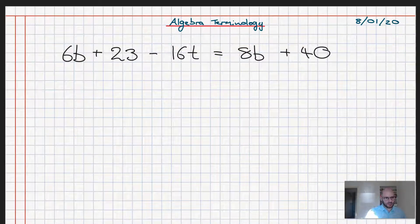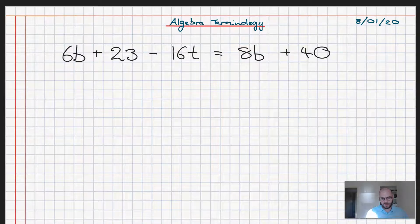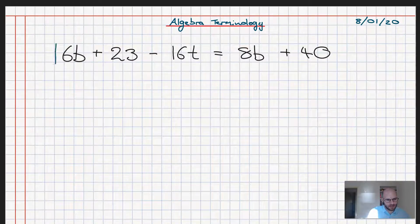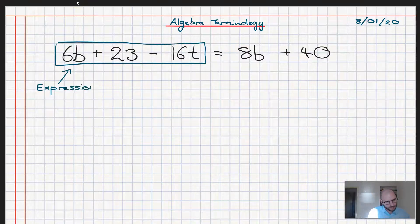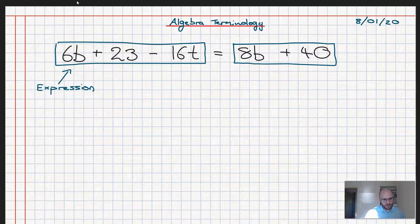Now the question we ask ourselves is, I can call this whole thing an equation, but what makes up an equation? And the answer to that is on either side of the equal sign, what we have are called expressions. So equations are made up of expressions.